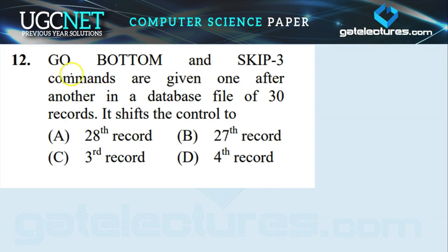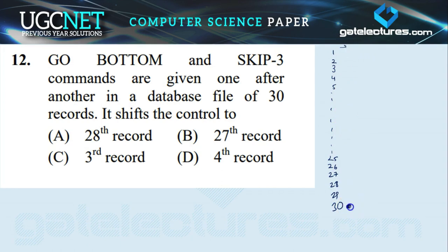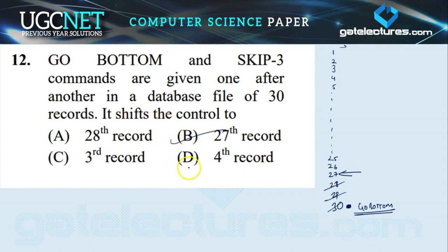Question number 12: GO BOTTOM, SKIP -3 commands are given one after another in a database file of 30 records. GO BOTTOM shifts the control to the last record, which is record 30. Then SKIP -3 means we skip back three records: from 30 to 29, 28, and 27. So after executing these commands, the control is at the 27th record.